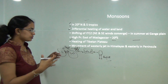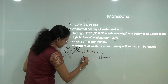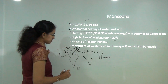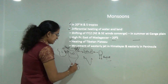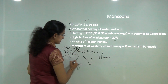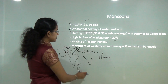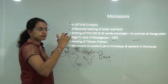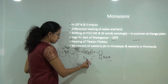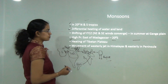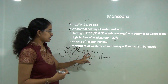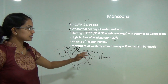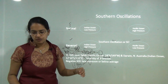The southwest monsoon comes mainly because of high pressure zones that form near Madagascar at about 20 degrees south, and also because of the heating of the Tibetan Plateau north of the Indian mainland. This generates wind movement from high to low pressure, leading to rainfall over the Indian mainland. The movement of the westerly jet stream over the Himalayas and the easterly jet stream over the peninsula are also causes of monsoon.